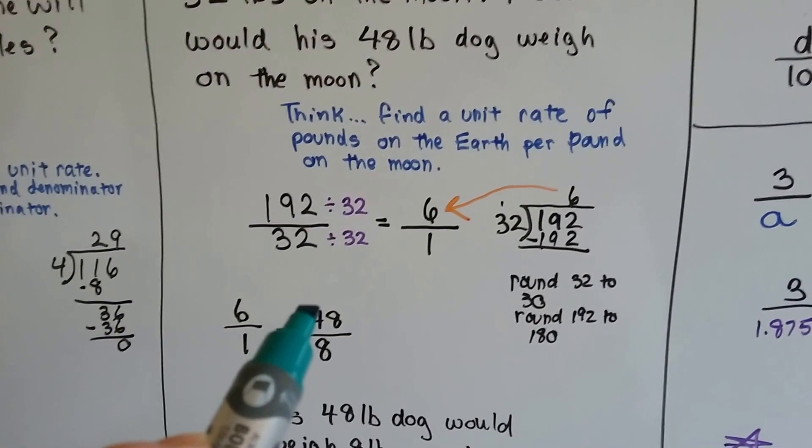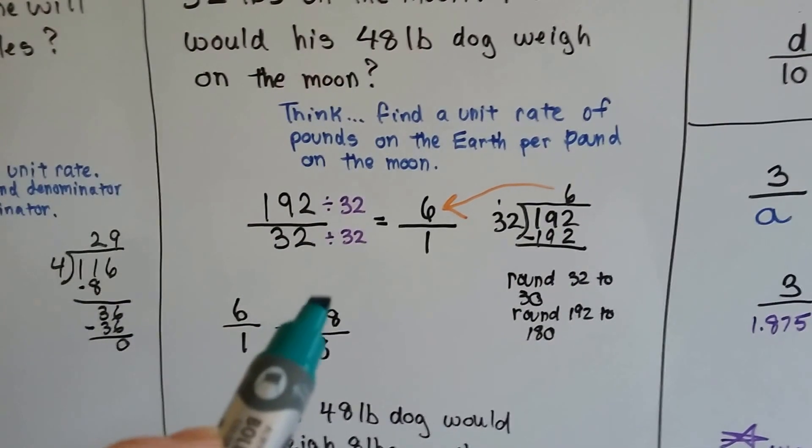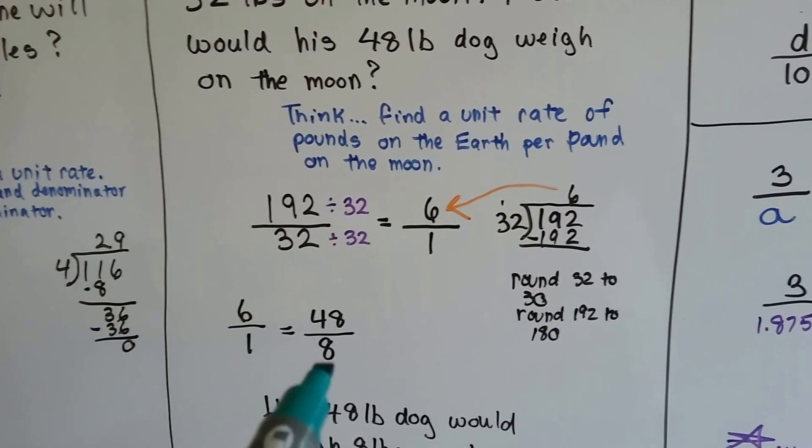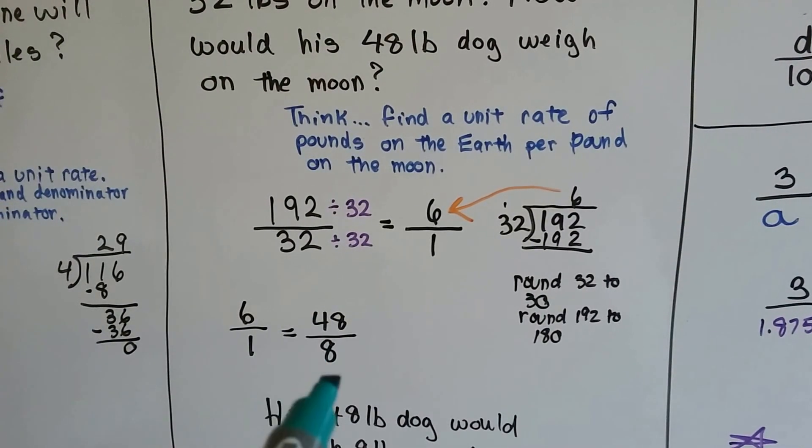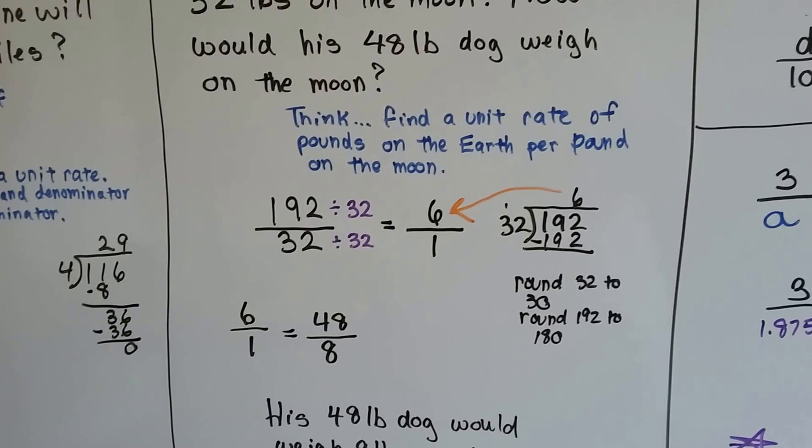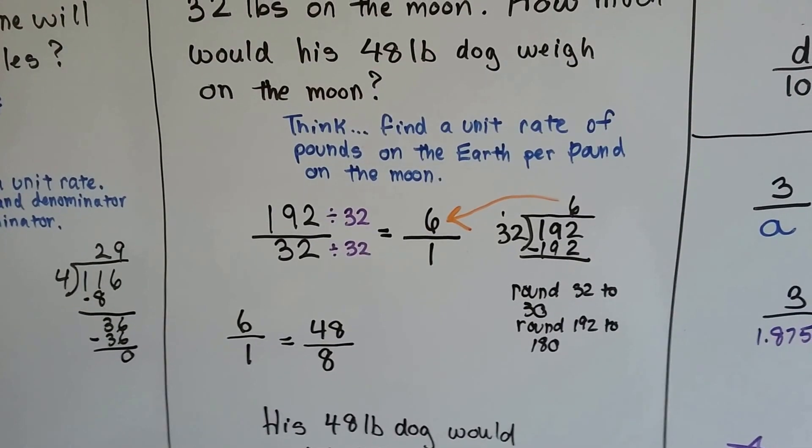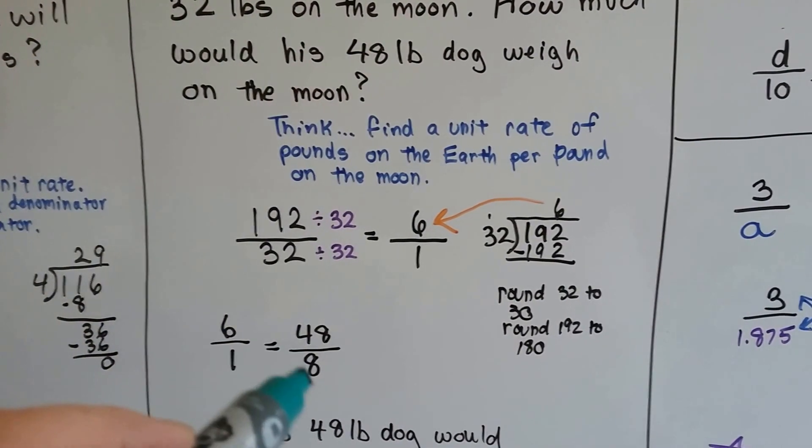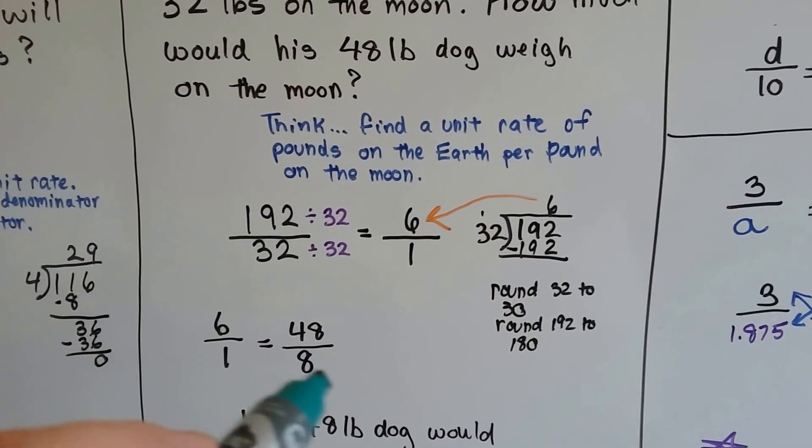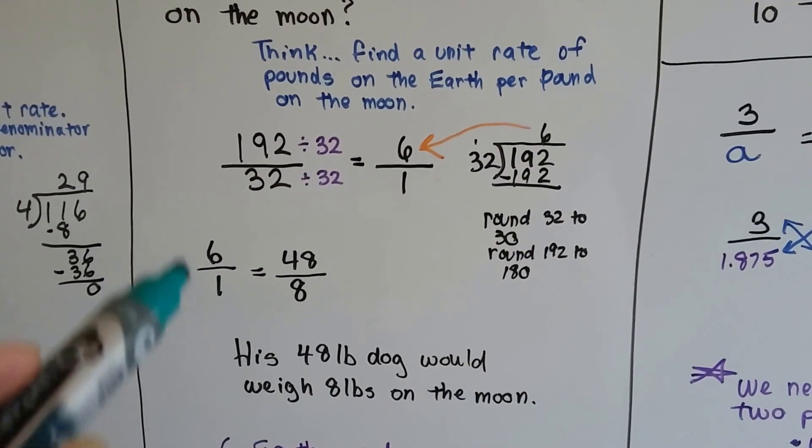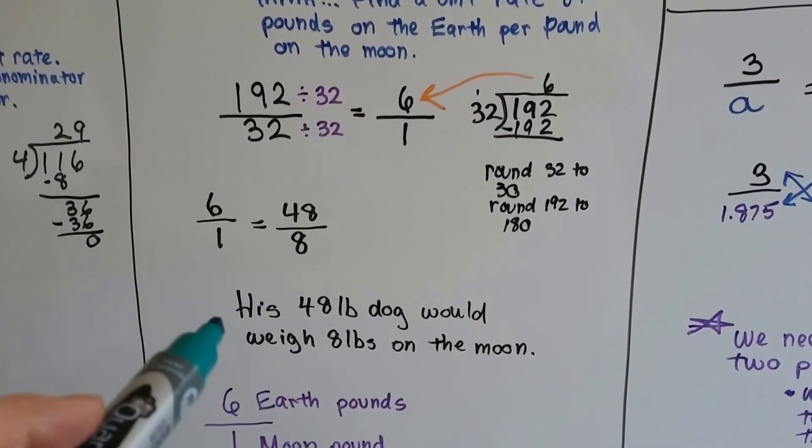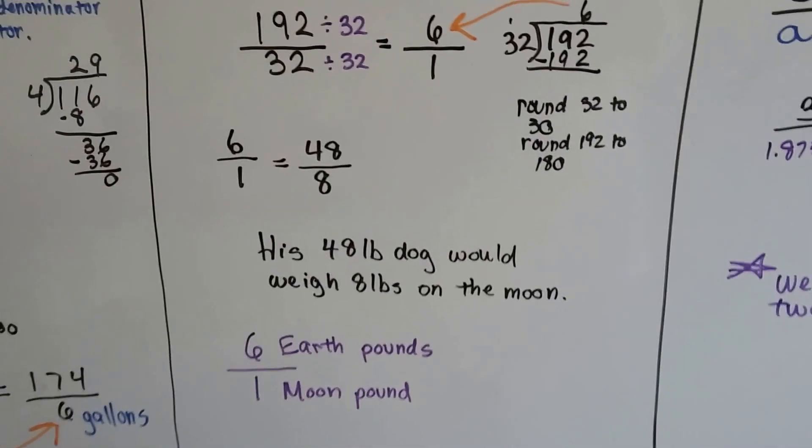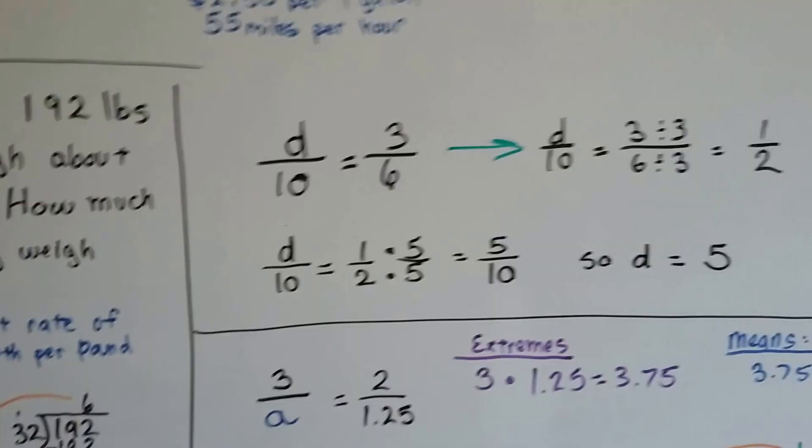If his dog weighs 48 pounds on Earth, we divide it by 6, and it's 8. So we know that his dog would weigh 8 pounds. 6 times 8 is 48. 6 Earth pounds is 1 Moon pound.